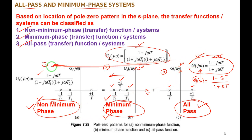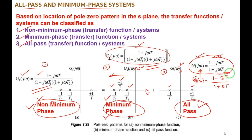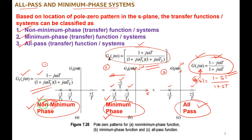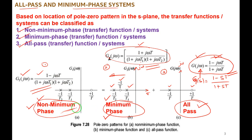We have the open loop transfer functions for all three: G₁ is the non-minimum phase system, G₂ is the minimum phase system, and G (the all-pass system) is denoted separately. Notably, the non-minimum phase system is the product of the minimum phase system transfer function and the all-pass system transfer function. So G₁(jω) = G₂(jω) × G(jω).